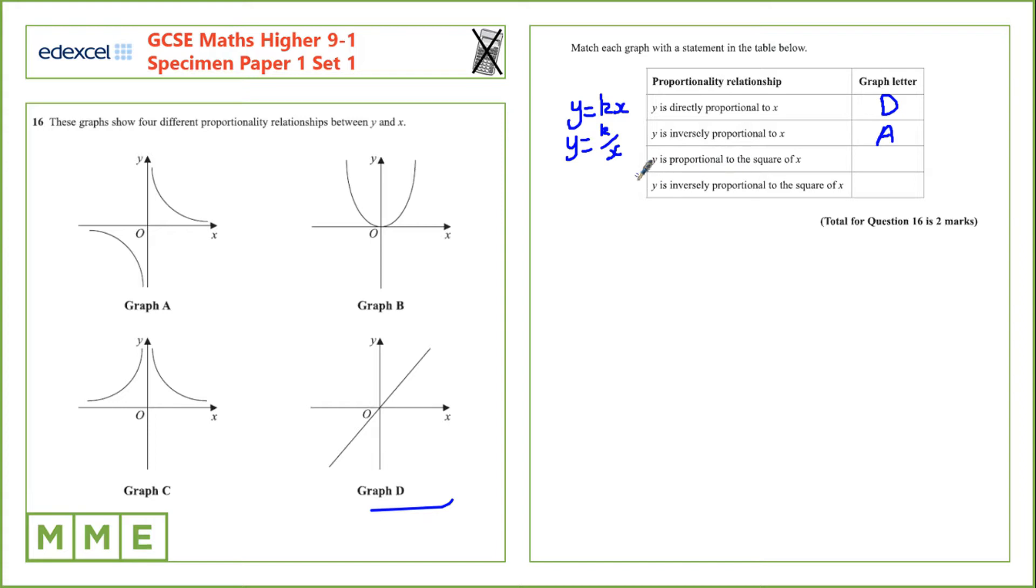Next one, y is proportional to the square of x. That'll be of the form y equals kx squared. So we're looking for a quadratic, that's B in the normal quadratic parabola shape. And y is inversely proportional to the square of x.